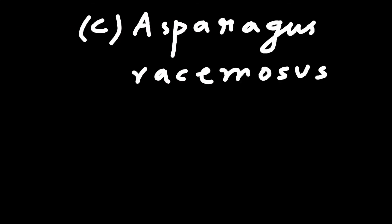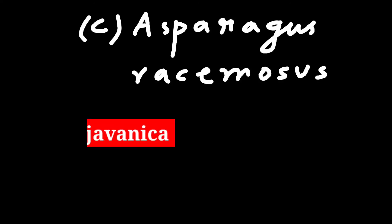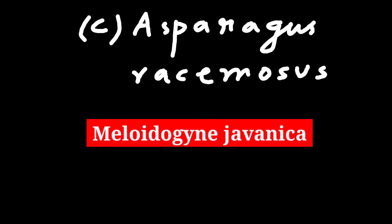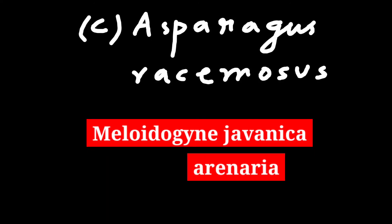The third one is Asparagus racemosus. The root diffusates of Asparagus racemosus actually inhibit the hatching of eggs of Meloidogyne javanica and Meloidogyne arenaria.